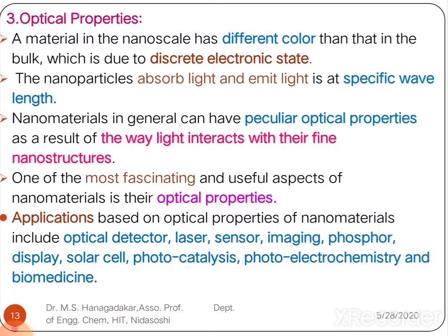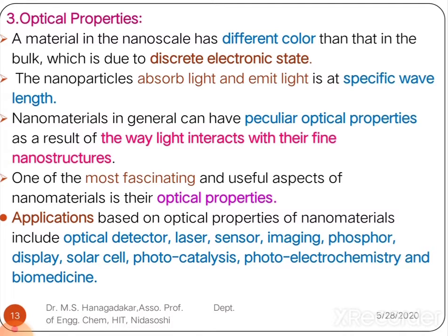Let us move to the third size-dependent property: optical properties. A material at the nanoscale has a different color than in bulk, which is due to discrete electronic states. Nanoparticles absorb and emit light at specific wavelengths. Nanoparticles in general can have peculiar optical properties when interacting with light because they are made into very fine nanostructures.